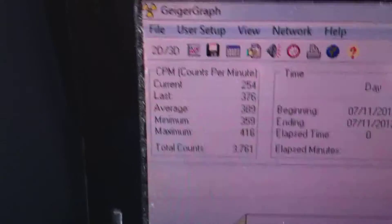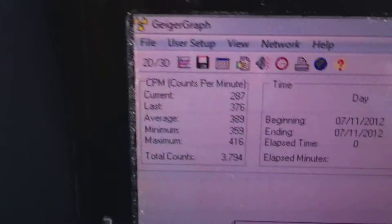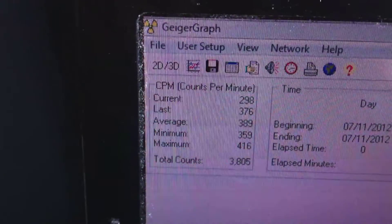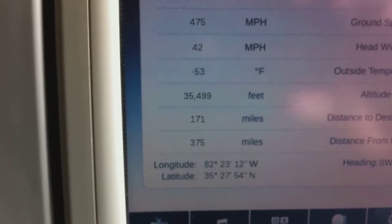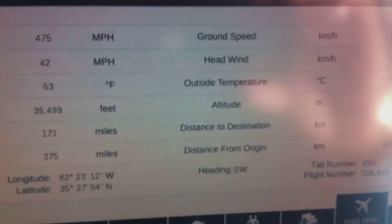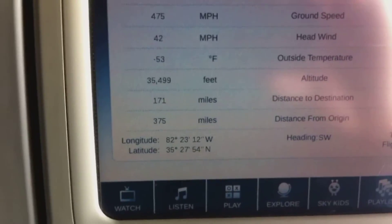Take a look at these readings. 416 counts a minute, 359 counts a minute. The amounts of radioactivity detected higher up in the air are quite impressive. We are at 35,499 feet, as you can see. In fact, it massively changed once we hit around 30,000 feet or so. Massively.